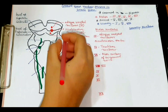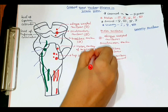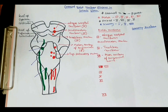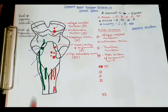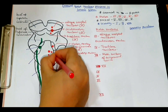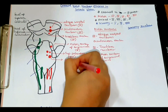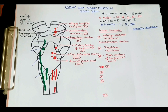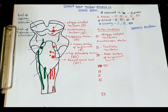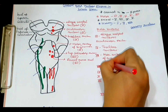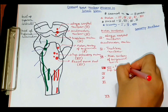At the lower pons, we can see there are four nuclei. One is the superior salivatory nucleus, which is a motor nucleus of the seventh cranial nerve. Another nucleus here is the facial nerve nucleus, which is also a motor nucleus of the seventh cranial nerve. So the seventh cranial nerve has two motor nuclei: the facial nerve nucleus and the superior salivatory nucleus.